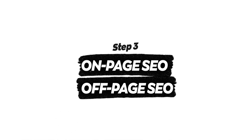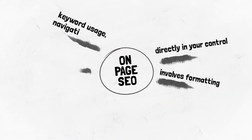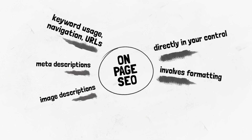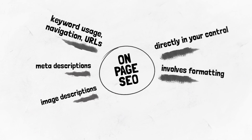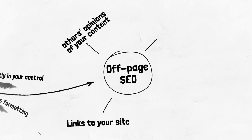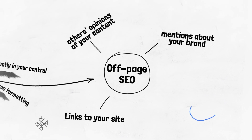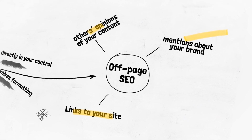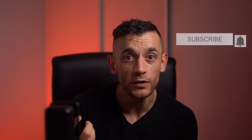Step number three: know the difference between on-page and off-page SEO. SEO isn't just about what's on the page — what's just as important is what happens off it. On-page SEO is more directly in your control; it involves formatting like H1 and H2 tags, keyword placement, page navigation, URLs, meta descriptions, and image alt text. Off-page SEO is more to do with others' opinions of your content — links to your site, mentions of your brand, and social media all play a big part. For a solid SEO strategy, it's important that you cover both.